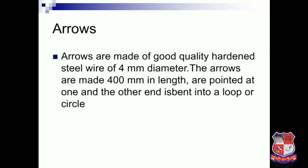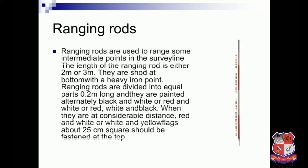Arrows are made of good-quality hard steel wire of 4 mm diameter, and are 400 mm in length, pointed at one end and bent into a loop or circle at the other. Ranging rods are used to range intermediate points on a survey line. The length of a ranging rod is either 2 m or 3 m. They are shod at the bottom with a heavy iron point, and are divided into equal parts of 0.2 m, painted alternately red and white or black and white. At considerable distances, red and white or white and yellow flags of about 35 cm should be tied at the top.